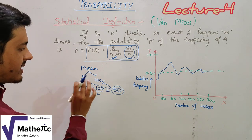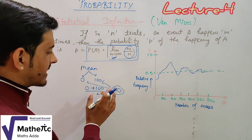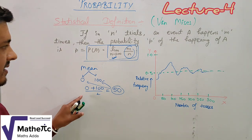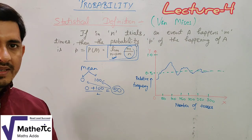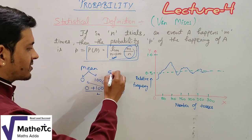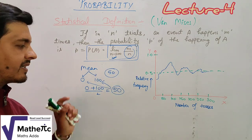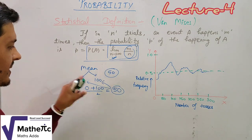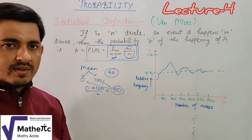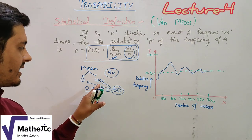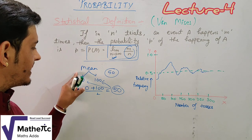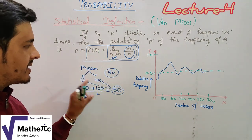One student scored 0 and the other scored 100. When the number of trials is small, the mean is not accurate and the probability we apply may not be meaningful. If you increase the number of trials — that is, more students — the mean becomes more reliable. So the probability from a statistical definition becomes more accurate as the number of trials increases.